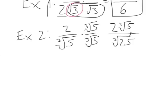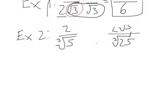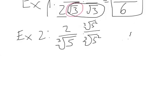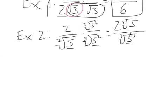We need to multiply by something that's going to cancel out this radical. What could I multiply the denominator by to cancel it out? It's actually going to be the cube root of 5 squared. In the numerator I'll get 2 times the cube root of 25. In the denominator, I'll have the cube root of 5 to the 3rd power — which equals 5. So I end up with 2 times the cube root of 25 over 5. That's my answer.